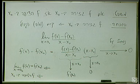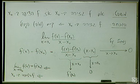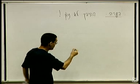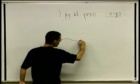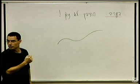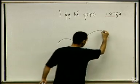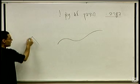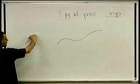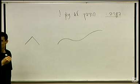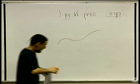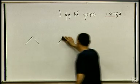למה? כי הגזירות - כשאני חושב על גזירות, אני חושב על משהו שהוא חלק. משהו גזיר הוא משהו שבכל נקודה יש לו משיק. אם יש שפיץ, אם יש פתאום משהו כזה, אז אני לא יכול להגדיר את השיפוע בנקודה הזאת. זה האינטואיציה, ואז הדוגמה תגבה את האינטואיציה הזאת.